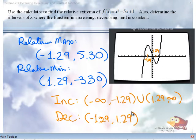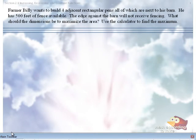Okay, where are we? Constant? We're not constant. Typically for polynomials of degree greater than or equal to one, you won't have constant, you'll just have increase decrease. It's a weird problem. Yes, Farmer Billy wants to build four adjacent rectangular pens.